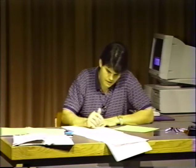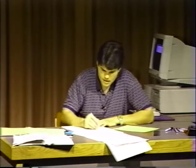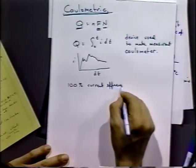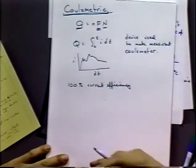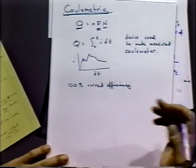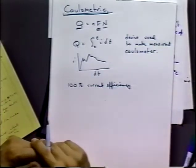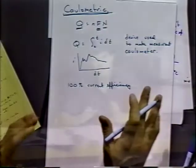The other problem with the coulometric method is that it requires at least 100% current efficiency. We have to know that all of the electrons we're putting in are involved in doing the reaction overall, because if not, we're going to measure the charge for some other side reaction. We either have to know exactly that it is 100% or we have to know the conditions well enough to correct for the non-100% current efficiency.